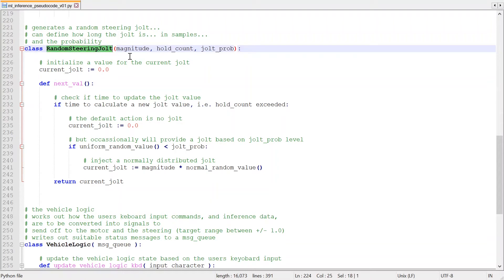There are three main parameters. The magnitude, that controls the size of the jolt. The hold count, which controls how long the jolt is applied for. And the probability of injecting a jolt. So how often the steering gets the kick.